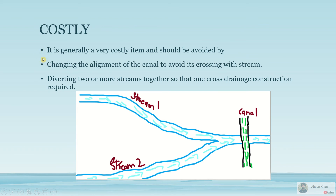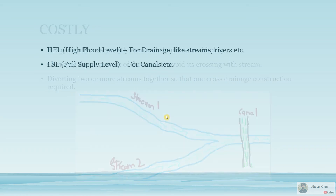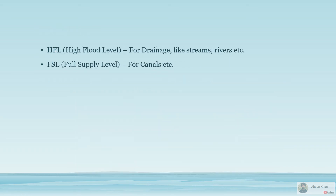Before constructing cross drainage works, some study should be done. For example, you can try to ensure that two streams are diverted and join at one area so you pass one canal through them. If you are constructing a canal that crosses two streams, a lot of cross drainage work will be required, with more costs and maintenance. So it is a better idea to align it where you require only one drainage work.